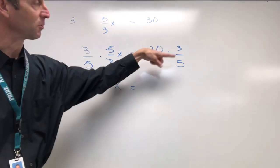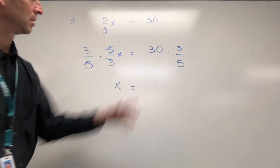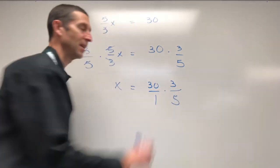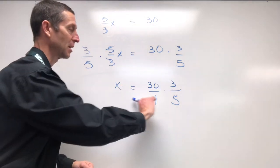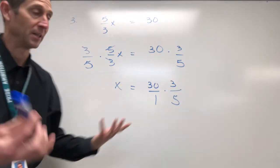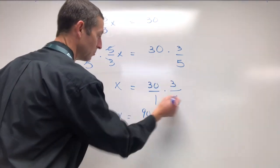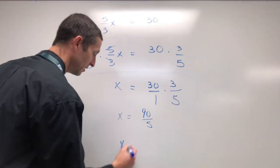You got to clean this up over here on the right side still. A lot of people do this: they'll do the 30 over 1 times the 3 over 5. They like it so they can just multiply the tops, multiply the bottoms. That's kind of the way they like to do it. So what is this? 30 times 3 is 90. 1 times 5 is 5. And we're in business.